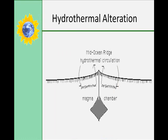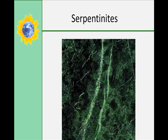A third type of metamorphism is called hydrothermal alteration. It's related to the circulation of hot mineralized fluids through rock bodies. This is particularly important in the alteration of ocean crust in the high heat flow regime near the mid-ocean ridges. Serpentinites form from hydration of peridotites — olivine-rich rocks at the base of the oceanic crust. Hydrothermal alteration also occurs as a result of hot fluids escaping from a cooling pluton, in addition to the high-temperature contact metamorphism occurring there.